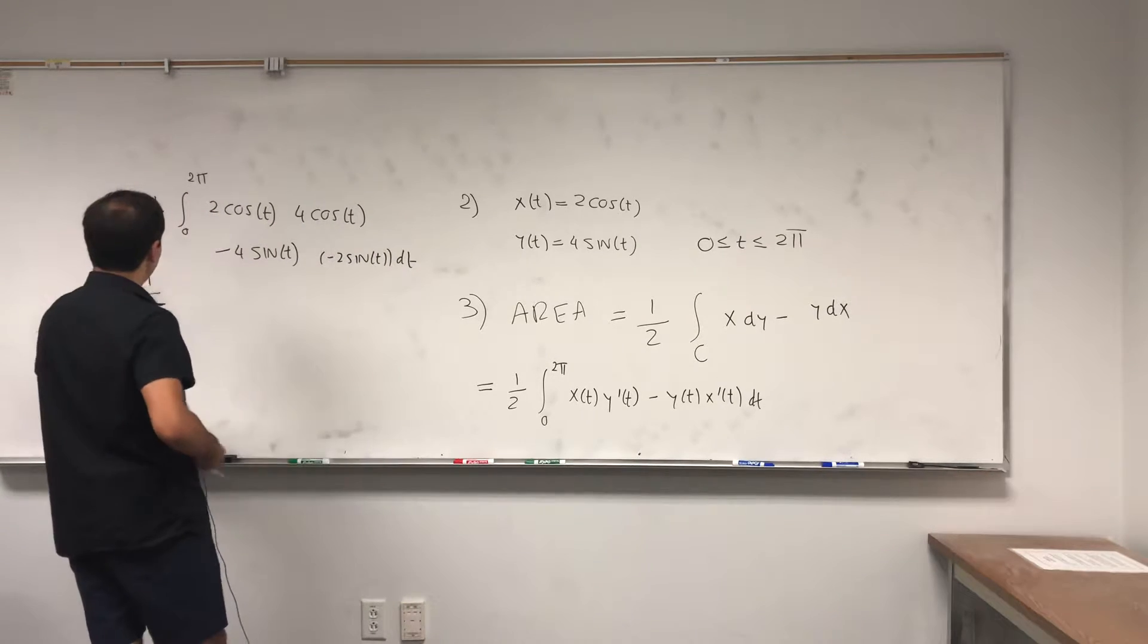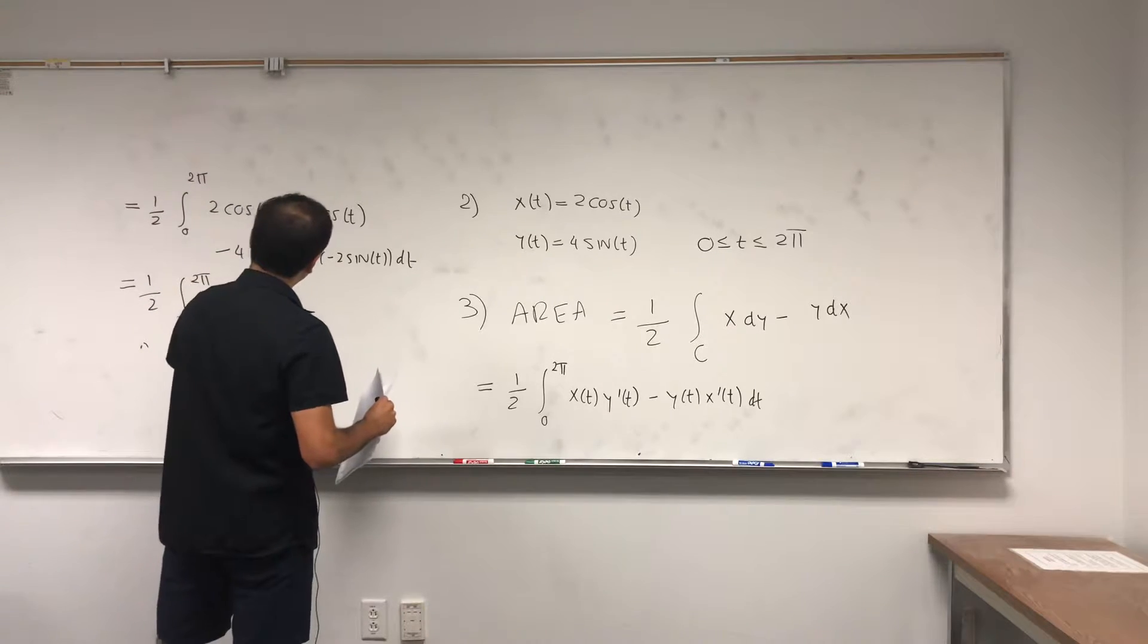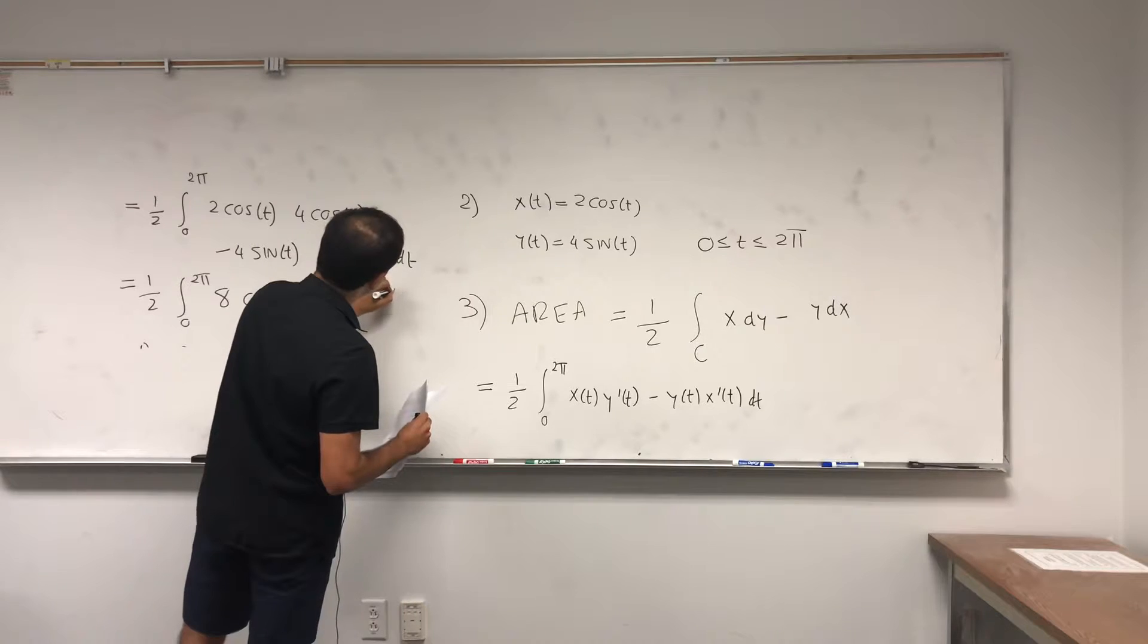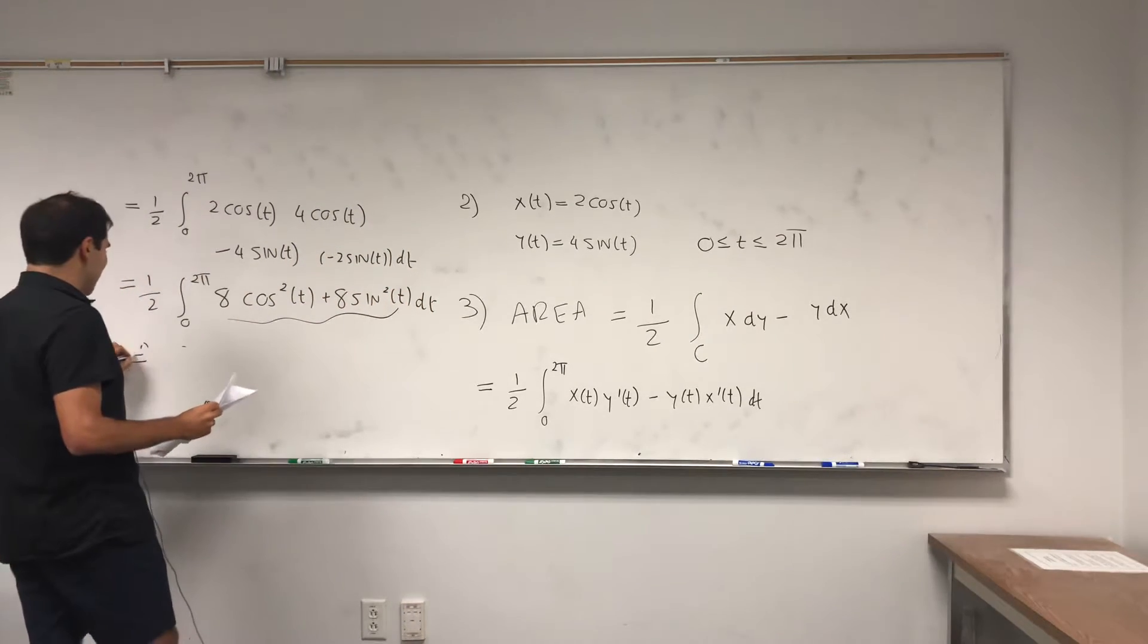And then lo and behold, it's one half times the integral from zero to two pi, eight cosine squared of t plus eight sine squared of t dt. And this simplifies.